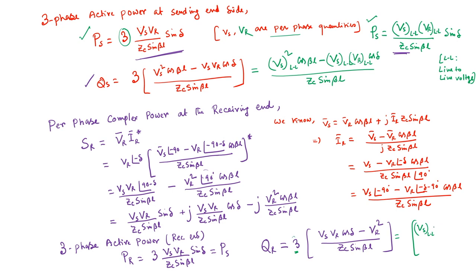Similarly, the receiving-end expressions are: PR = VS(L-L)·VR(L-L)·cos(δ) / [ZC·sin(βl)] and QR = VS(L-L)·VR(L-L)·cos(δ) − VR(L-L)²·cos(βl), all divided by ZC·sin(βl). These expressions are very important to understand the compensation of power transmission lines and the rating requirements of compensators placed along the line.